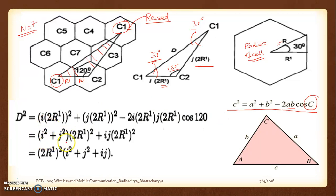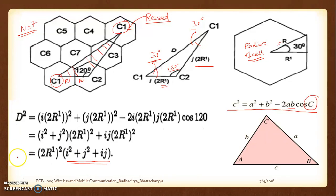Taking 2r1 common, we get d² = (2r1)² · (i² + j² + ij). Please keep in mind this is what we are going to have. Somewhere down the line we have to relate d with respect to 2r1 and n. That is the idea while deriving — this is how we have to go. Two very important distances now need to be introduced.